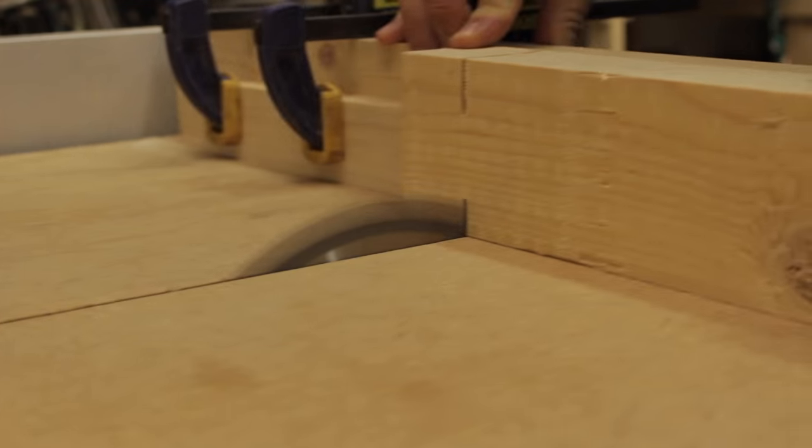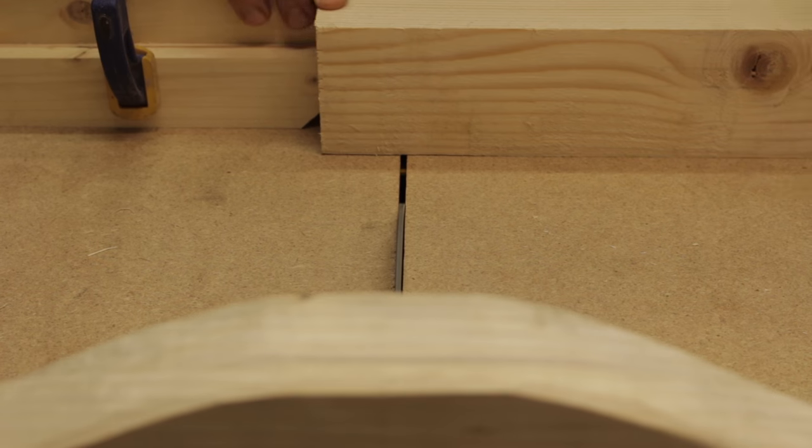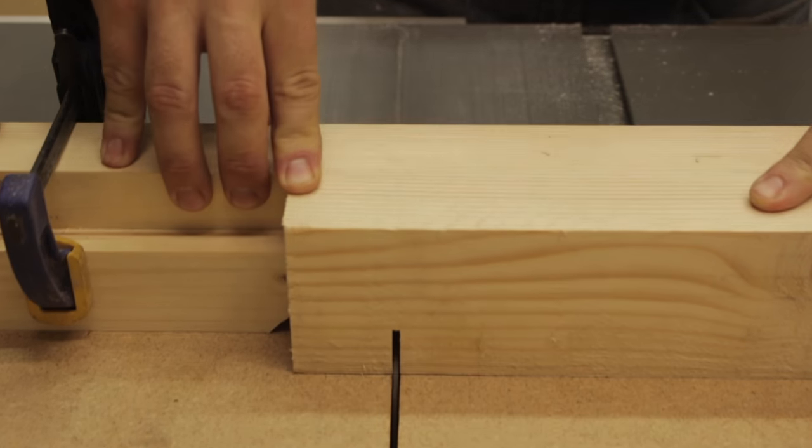So I cut the main pieces for the bed and then I started doing the bridal joints. I used my table saw and the sliding jig I have on it.